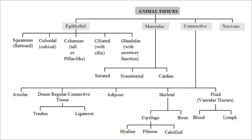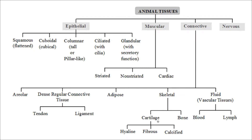Muscular tissue is classified into striated, non-striated, and cardiac based on structure and function. Connective tissue is classified into areolar tissue, dense regular connective tissue, adipose tissue, skeletal tissue, and fluid vascular tissues. Dense regular connective tissue comprises tendons and ligaments. Skeletal tissue consists of cartilage and bone; cartilage is classified into hyaline, fibrous, and calcified. Vascular tissue consists of blood and lymph. The fourth type is nervous tissue.